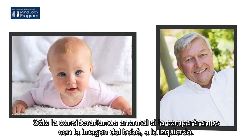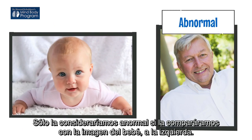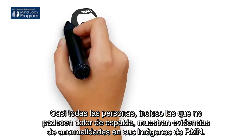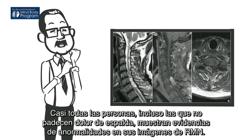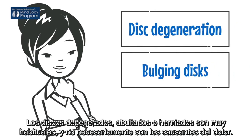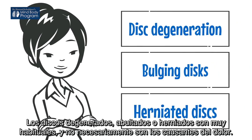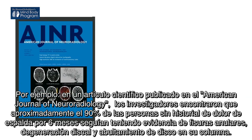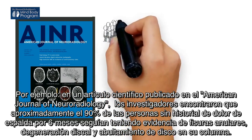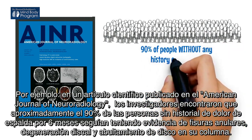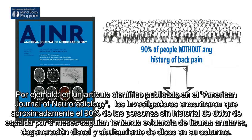We only describe it as abnormal when we compare it to the image of the baby. Most people, even if they don't have any back pain, will still have evidence of abnormalities on MRI scans. Disc degeneration, bulging discs, and herniated discs occur very commonly and may not be causing symptoms of pain. For example, in a paper published in the Journal of Neuroradiology, researchers found that approximately 90% of people without any history of back pain in the last six months still have evidence of annular tears, disc degeneration, and disc bulging at one or multiple levels.